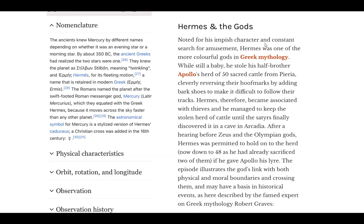So Mercury and Hermes are tied to Apollo. So noted for his impish character and constant search for amusement, Hermes was one of the more colorful gods in Greek mythology. While still a baby, he stole his half brother Apollo's herd of 50 sacred cattle. And then he cleverly reversed their hoof marks by adding bark shoes to make it difficult to follow their tracks. And Hermes, therefore, became associated with thieves.